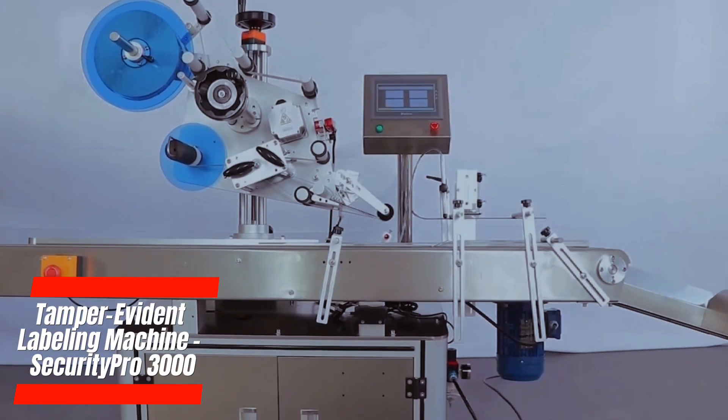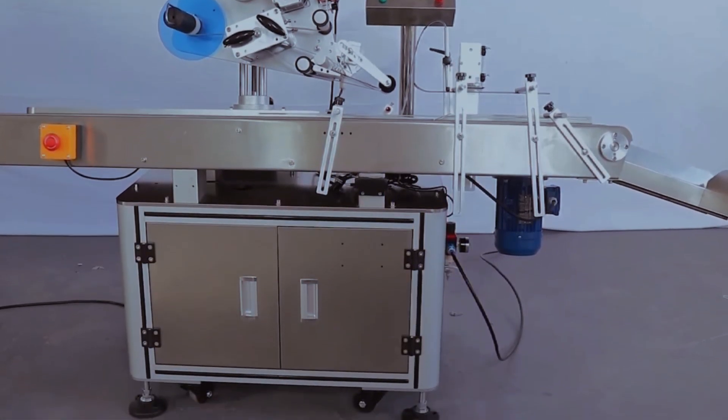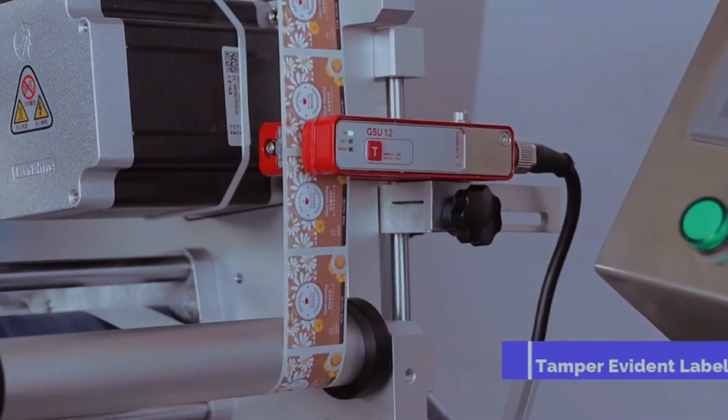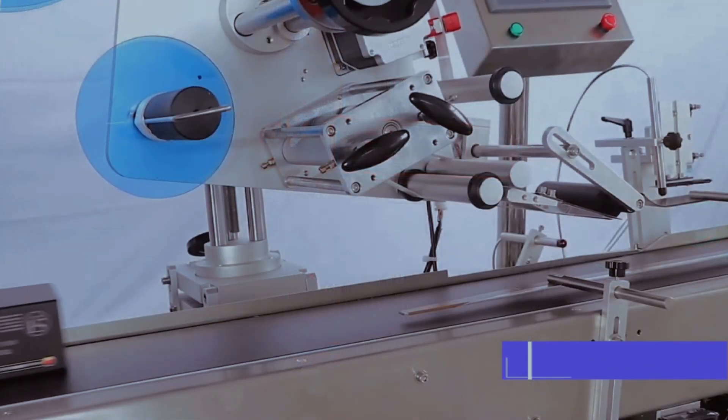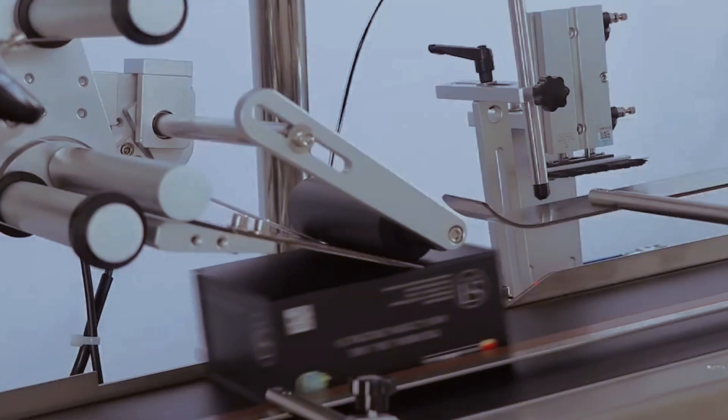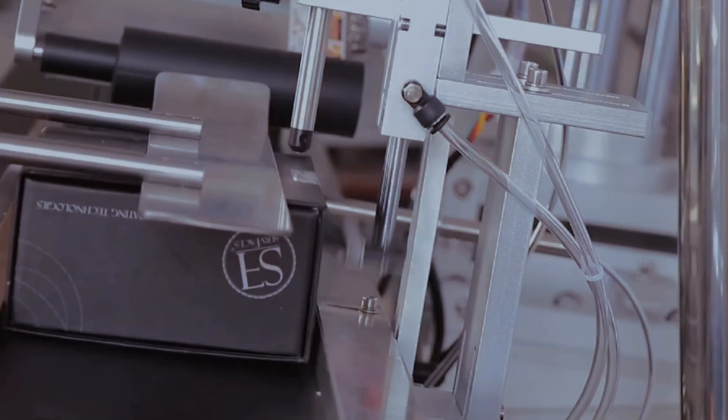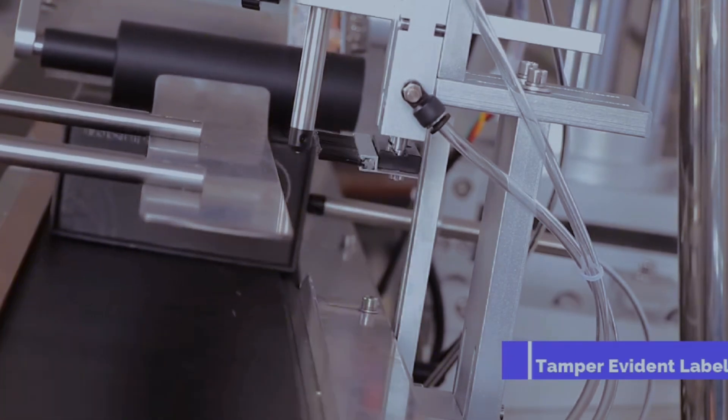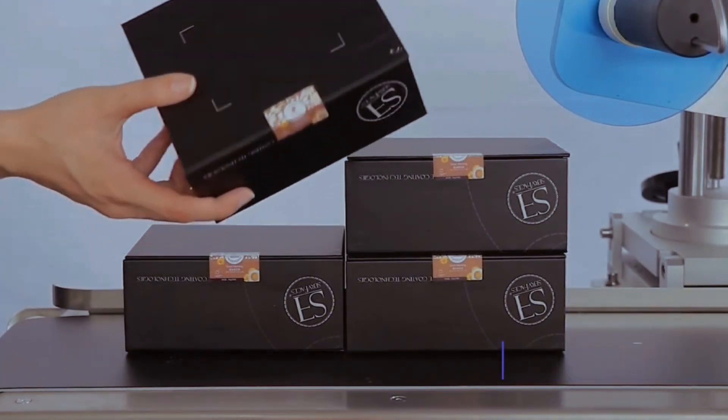The Security Pro 3000, a cutting-edge tamper-evident labeling machine, excels in applying security seals and tamper-evident labels to food products. Its advanced technology ensures secure and reliable sealing, preventing unauthorized access and preserving product integrity. Customizable to fit various packaging formats, this machine incorporates tamper-proof label applicators and innovative sealing mechanisms. The Security Pro 3000 is a go-to solution for food manufacturers prioritizing consumer safety and protection against tampering.